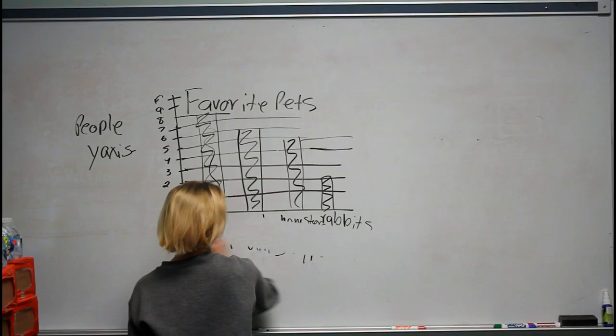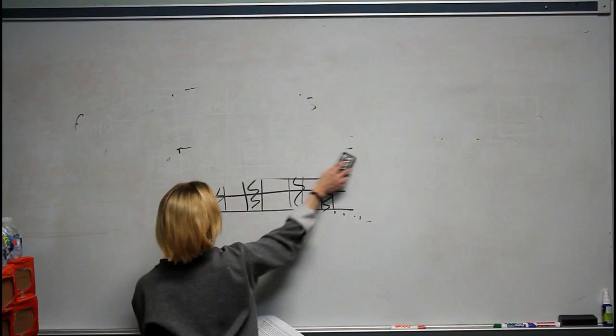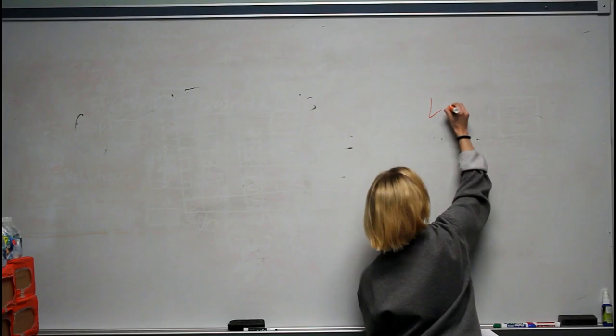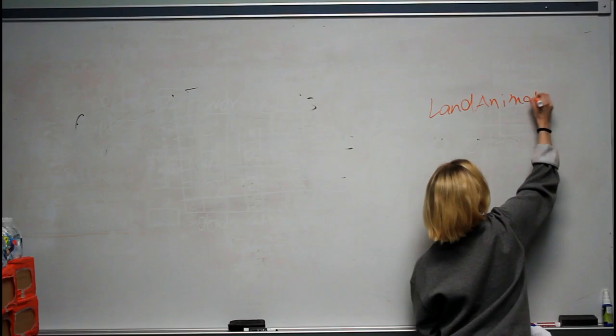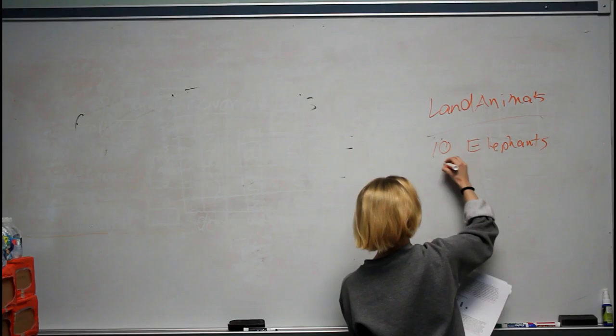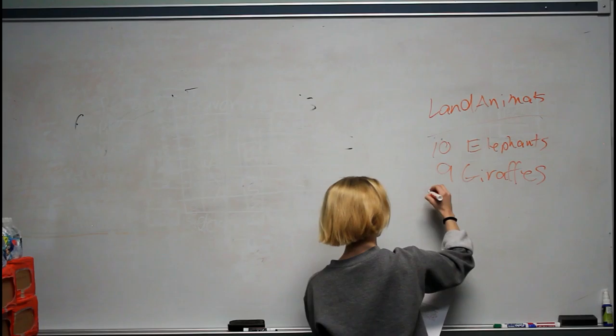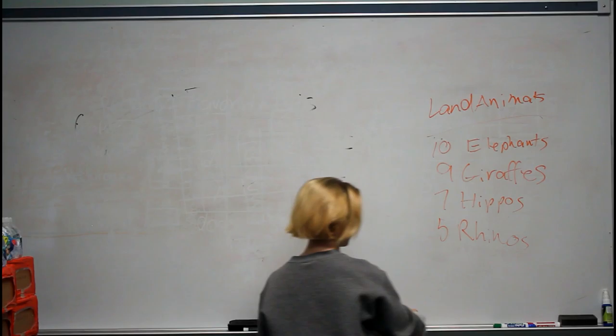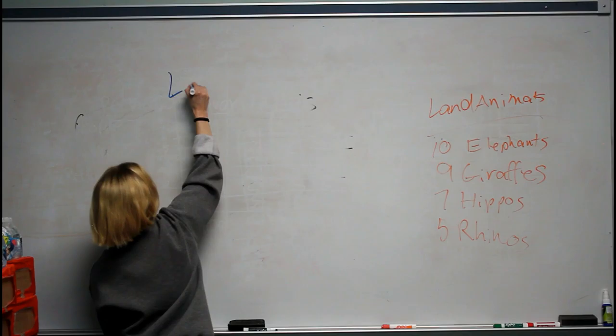Then we're going to move on to our second bar graph, which is going to be titled Land Animals. We're going to have 10 elephants, 9 giraffes, 7 hippos, and 5 rhinos. So first step again is to write our title, which is going to be Land Animals.